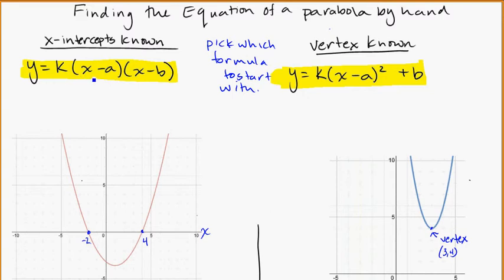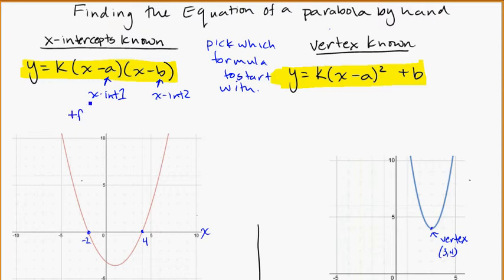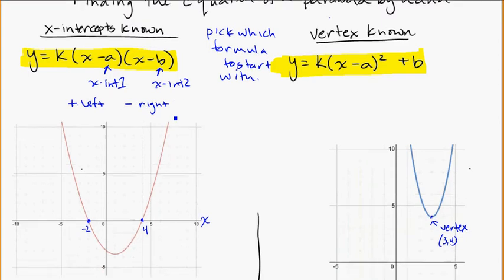In this generic formula, k is the scale factor we're going to solve for — it tells us how fat or skinny the parabola is. The a and b are just the x-intercepts off your graph: x-intercept 1 and x-intercept 2. The order doesn't matter, but watch your signs. If you see a positive in the formula, that intercept is on the left; a negative takes the intercept on the right.